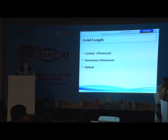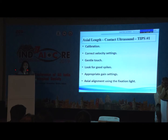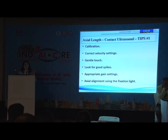For axial length, we can either use ultrasonic measurements or an optical mode. Ultrasonic waves are reflected as echoes at the various structures and we measure the distances traversed. While using contact ultrasound — which is not a preferred modality nowadays — you should always calibrate your machine. Correct velocity settings should be in place. Use a gentle touch — don't press or indent. Look for good spikes; all spikes should have at least 90% reflectivity.